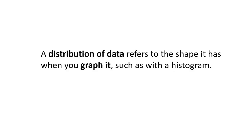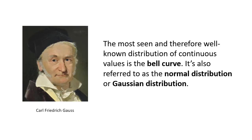A distribution of data refers to the shape it's in when you graph it, such as a histogram. The most commonly seen distribution of continuous values is the bell curve, also known as a normal distribution or Gaussian distribution, more formally named for Carl Friedrich Gauss. You'll see references to data being normally distributed or Gaussian — these are interchangeable, both referring to the same thing. Some examples of observations that fit a Gaussian distribution are people's heights, IQ scores, and body temperatures.